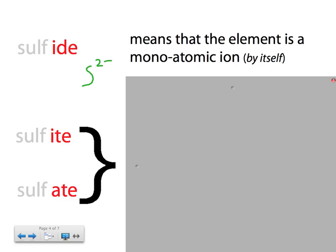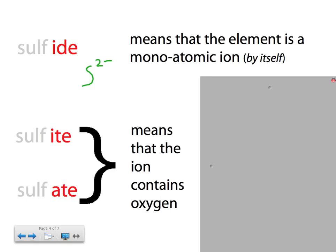Now, what does the '-ite' and '-ate' mean? Well, they mean it means that the sulfur is not by itself. It's bonded, these are polyatomic ions, and they're bonded with oxygens.